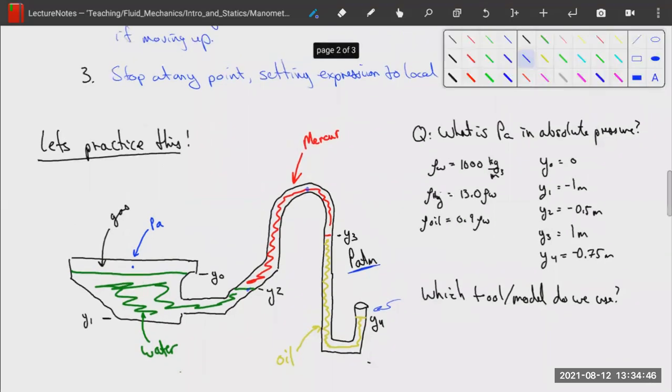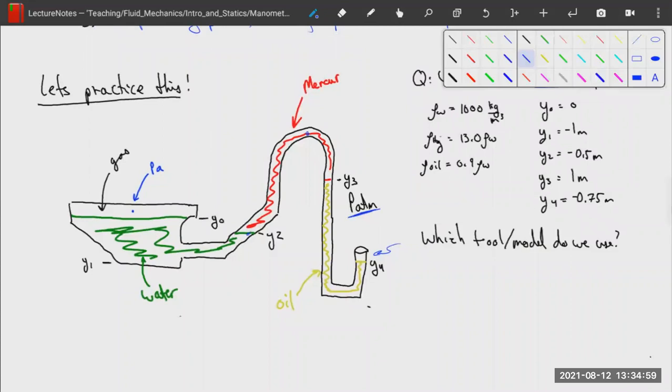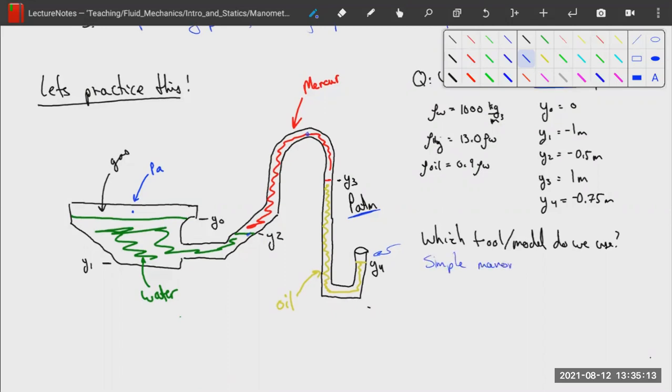All right. So we want to know what PA is in absolute pressure. So we're not going to use gauge pressure here. We're going to use absolute pressure. And let's get started. But the first thing we always ask ourselves, what tool, what model do we use? In this case, we just learned the simple manometer rule. So we are going to use the simple manometer rule.